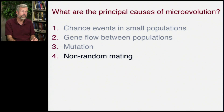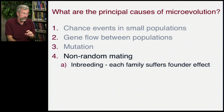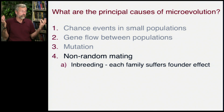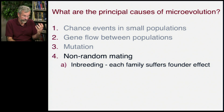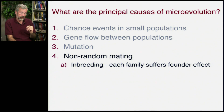The next force in microevolution comes from non-random mating. There are several forms we can look at. First is close inbreeding, where you have a family with your sister or your mother. When you do that, you're in effect putting your family through a founder effect.